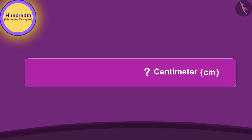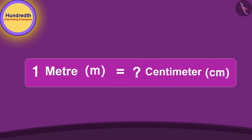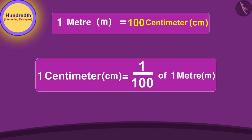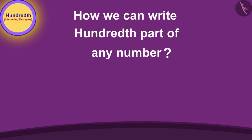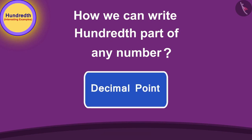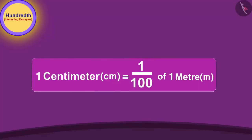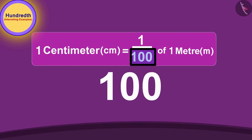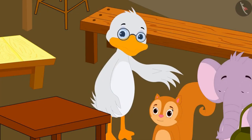Tell me, how many centimeters is 1 meter? 100 centimeters. Exactly. It means 1 centimeter is 1 hundredth part of a meter. Let me tell you how we can write the hundredth part of any number using decimal point. A centimeter is 1 hundredth part of a meter. Here, we are dividing 1 by 100. Can you tell me, how many zeros are there in a hundred? Uncle asked Chanda.